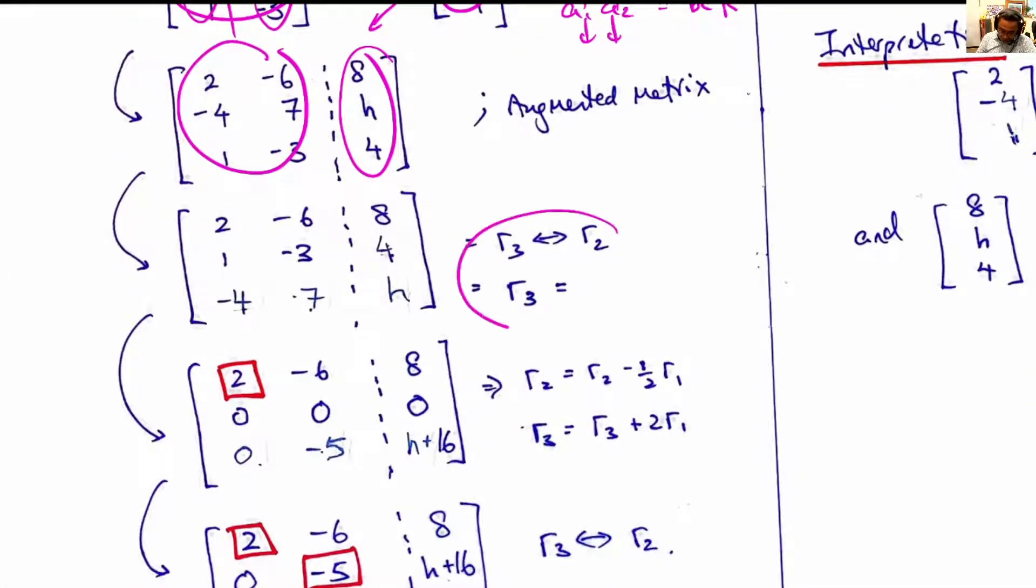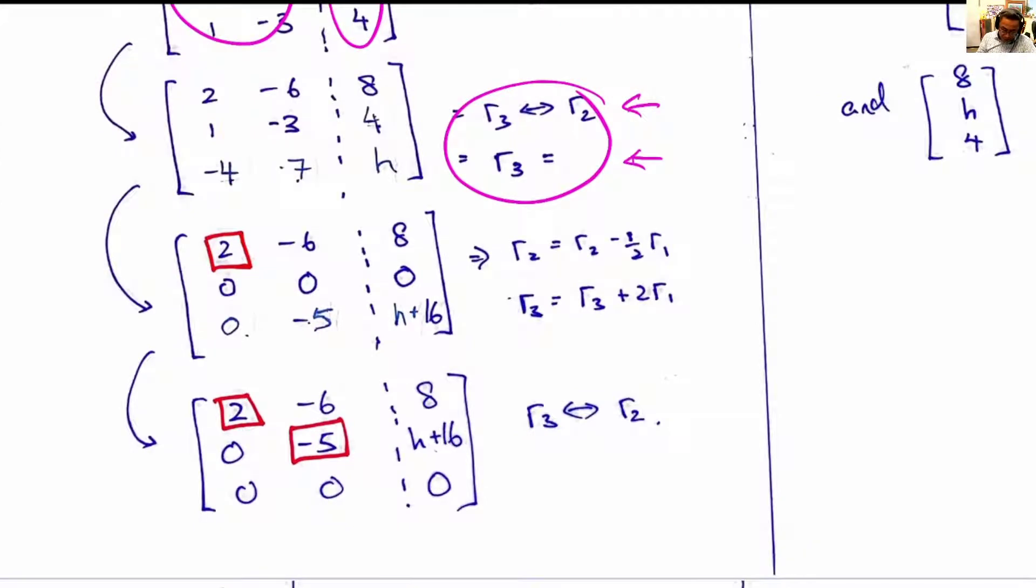As we progress in Gaussian elimination, look on the right side to see the operations. After each step, we can find the pivot. In the next step, we have reached all zeros here and non-zeros here.